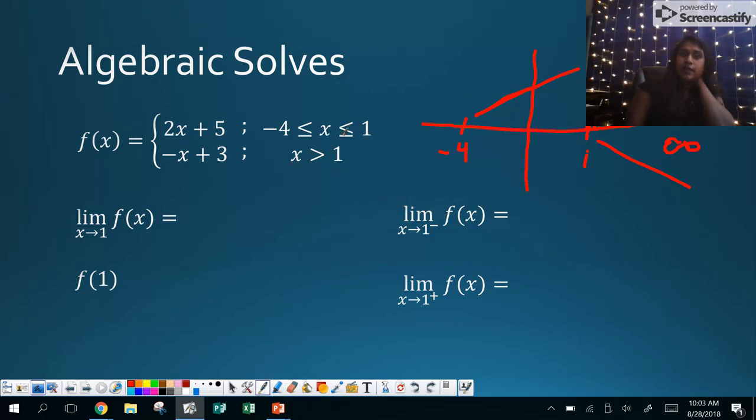So from the left, that means that's this function right here because that is less than 1. That's from the left on my numeric value. So I plug in 2 times 1 plus 5, not divide, plus. So that becomes 2 plus 5, which is simply 7. From the right, that's this one right here. So I'm going to plug in this equation. Negative 1 plus 3. So that's 2. So again, my limit does not exist because the limit from the left does not equal the limit from the right.